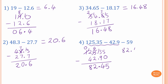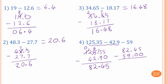What we need to do is minus 59 from 82.45. So I write 82.45 minus 59 — remember 59 is the same as 59.00. 5 minus 0 is 5, 4 minus 0 is 4, decimal point. 2 cannot minus 9 — borrow 1 from 8, so 8 becomes 7 and 2 becomes 12. 12 minus 9: 10 minus 9 is 1 and 2 is 3. And then 7 minus 5 is 2. So the answer is 23.45.